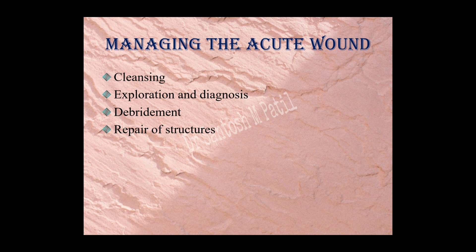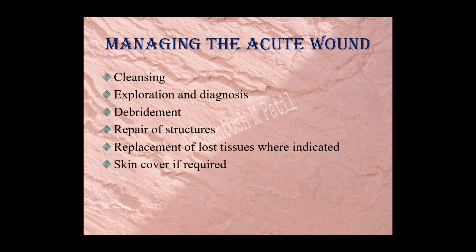Repair of structures depends on the type of wound — clear-cut wounds can have primary suturing, while devitalized tissue requires secondary or tertiary type of healing. Replacement of tissue loss: if there is degloving injury with lot of skin loss, patient must be subjected to skin grafting immediately. Suturing must always be done without tension to prevent pressure necrosis and tissue necrosis.